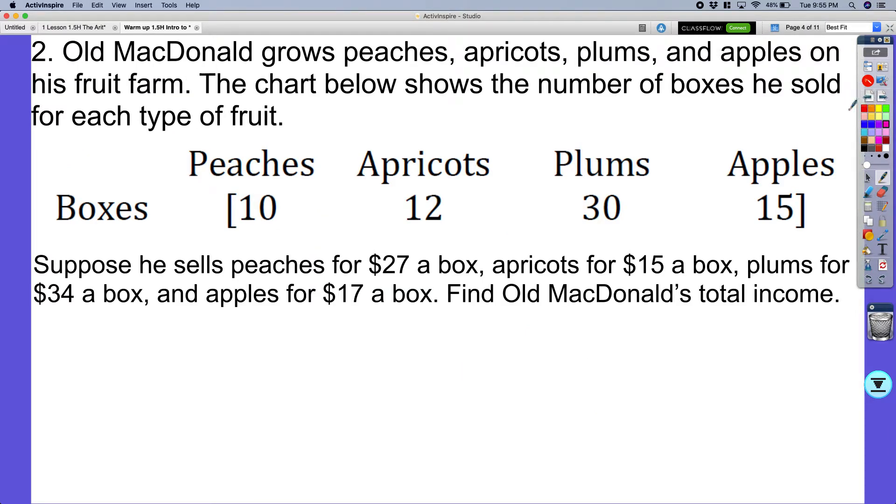Old McDonald had a farm, and he also grows peaches, apricots, and plums, and apples. And here's his fruit chart. So he has the number of boxes he sold of each fruit.